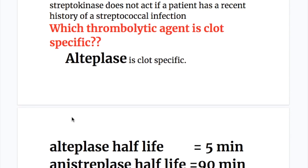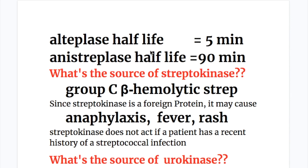Which thrombolytic agent is clot-specific? Alteplase is clot-specific, meaning it acts on the plasminogen in a thrombus. Alteplase has a half-life of five minutes, whereas anistreplase has a half-life of 90 minutes.